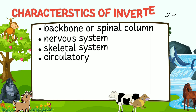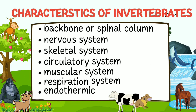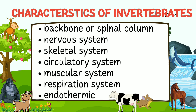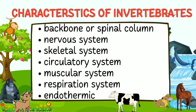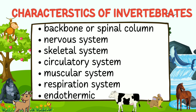Vertebrates share several key characteristics that set them apart from other animal groups: a backbone or spinal column, a nervous system, skeletal system, circulatory system, muscular system, respiratory system, and they are also endothermic.